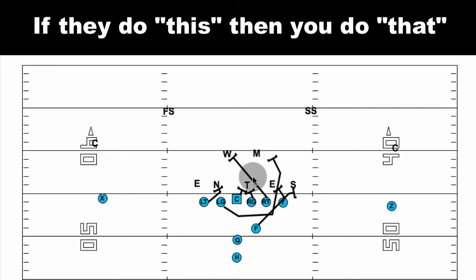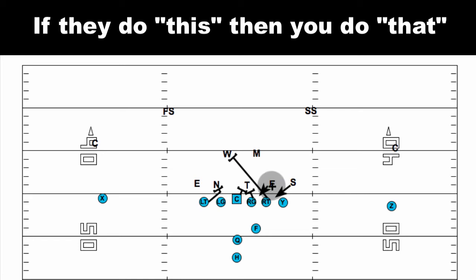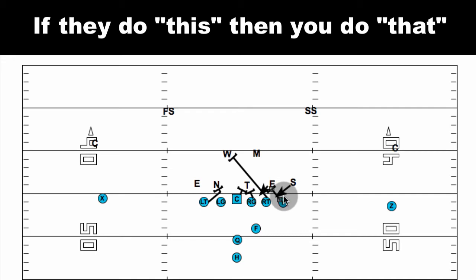One thing defenses will sometimes do to force you to change your blocking scheme is change the gap assignments for their defenders. Let's say the safety shoots down inside and they're going to pinch that end inside to take the C and D gaps away, because they don't want you running into the C gap. As the safety squeezes inside, he's riding the hip of that tight end down inside, so the tight end is blocking down inside.